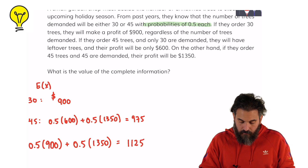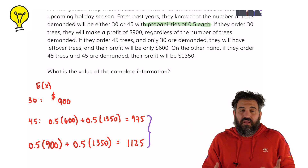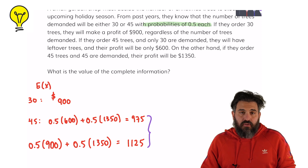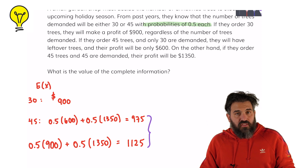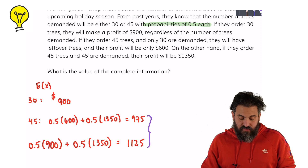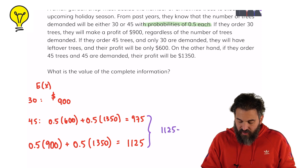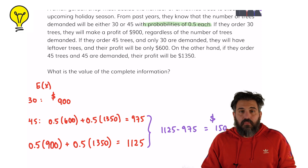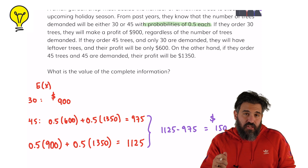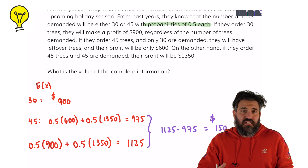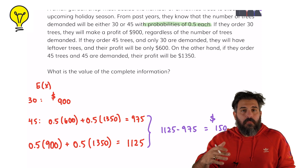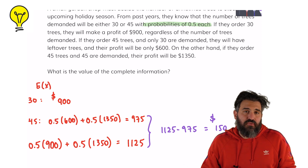Now look at the difference. Without having the information our expected return is $975. With the information our expected return goes up to $1,125. The difference between these two is the value of having that information. Knowing how many trees we're going to sell increases our expected return by $150.